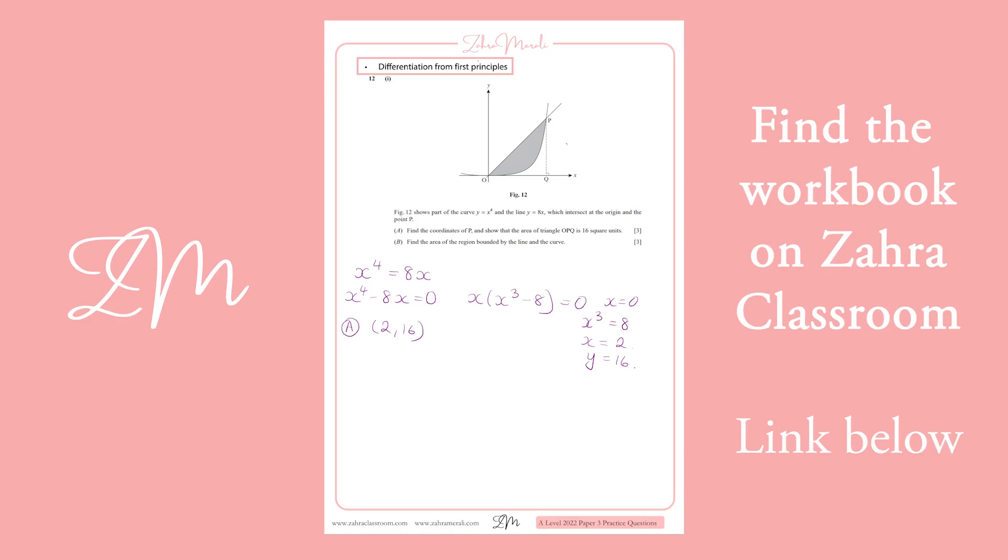And if I want to find out the area bounded by the line and the curve, what I'm going to have is the bit that's shaded. So, I've got a triangle minus this area here, which is underneath the curve, between Q, or the coordinate at Q and O.